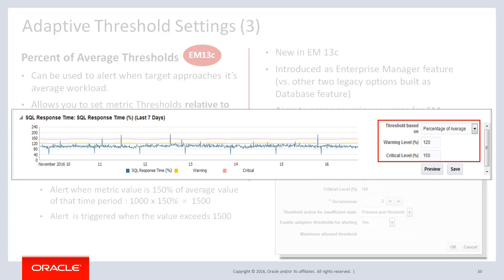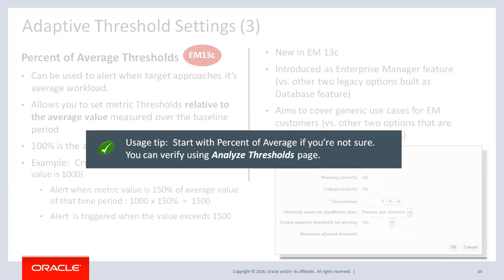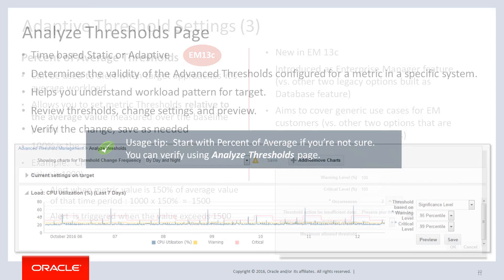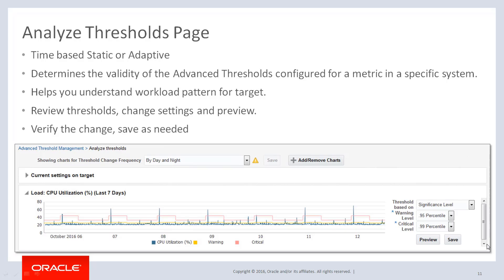However, these adaptive options can be a little tricky to many users, especially at the beginning. Our recommendation is not to look into the threshold option details at the start, unless you are already familiar with them, but to start from one of the existing settings. The percent of average is a good one to start with because it is more generic and easier. You can then use the analyze threshold page, which provides a graphical user interface to verify the threshold. Here is a screenshot of that page — once you configure the advanced threshold for a metric, either time-based or adaptive, you can use this page to determine the validity of the configured threshold.